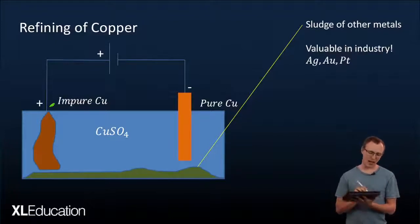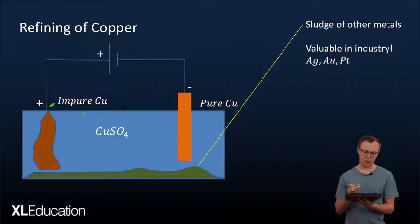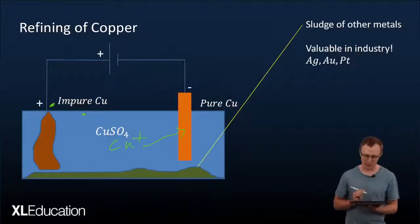So we've got a solution of copper sulfite. And then what we do is we allow the electrochemistry to do its magic so that we take copper ions from the solution and we reduce them in order to form pure copper on the cathode.